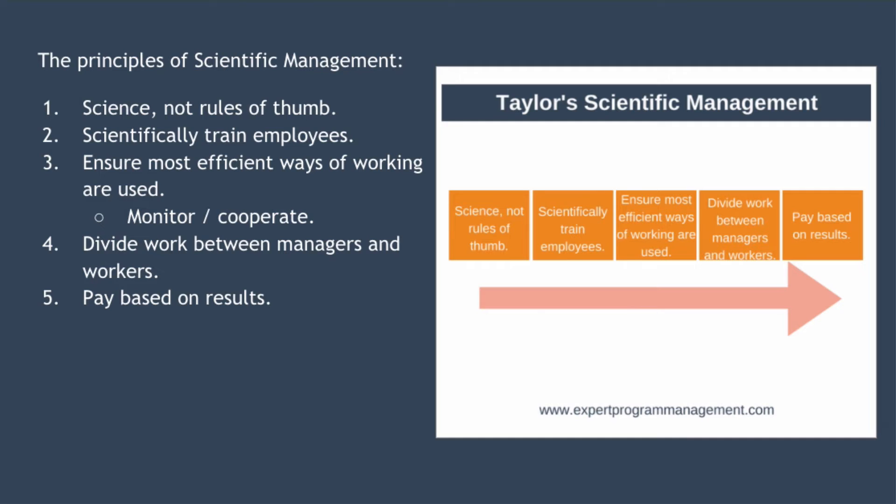The second principle is to scientifically train employees. Don't allow employees to train themselves. Instead, each employee should be taught exactly how each task should be performed. Taylor didn't want employees thinking for themselves — he simply wanted a simple task performed as quickly as possible. In a nutshell, workers should be paid for doing, not for thinking.